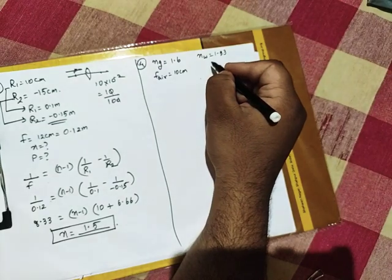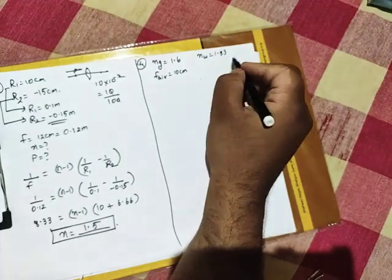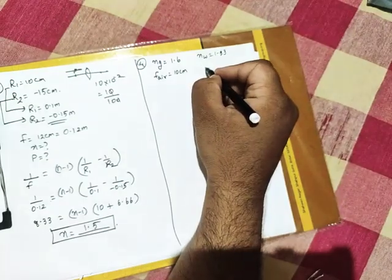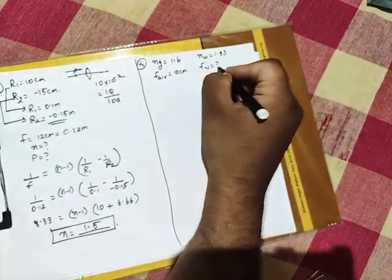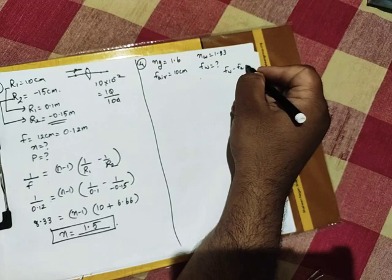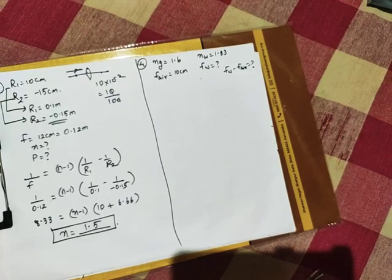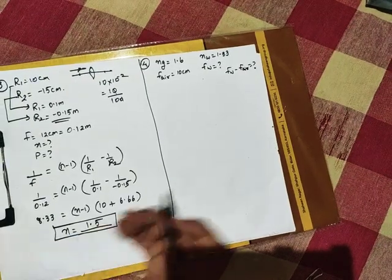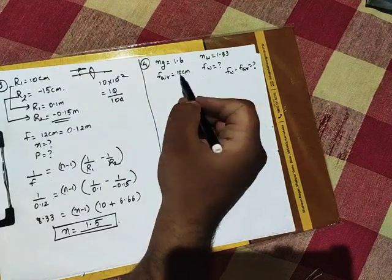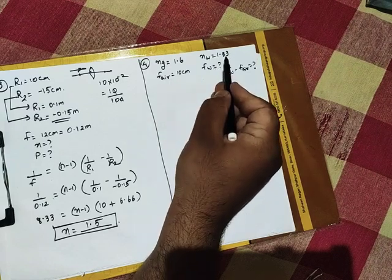Find the focal length when immersed in liquid of refractive index 1.33. One other liquid is 1.33, it has to be water. So focal length in water. Also, find the change in focal length. fw minus f air. I will repeat the question: A glass lens of refractive index 1.6 has focal length 10 cm in air. Find its focal length when immersed in liquid of 1.33 refractive index. Also, find the change in focal length.